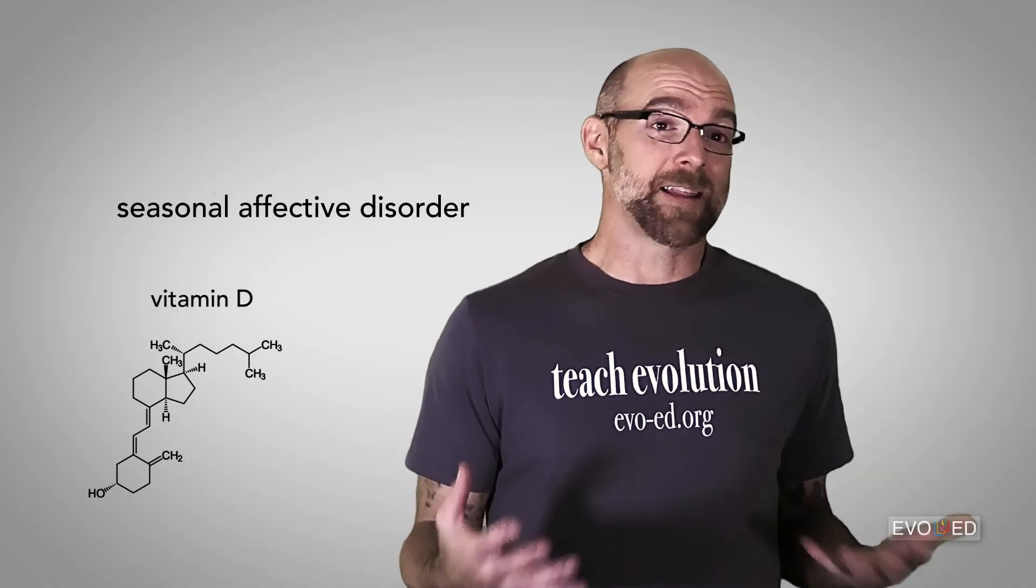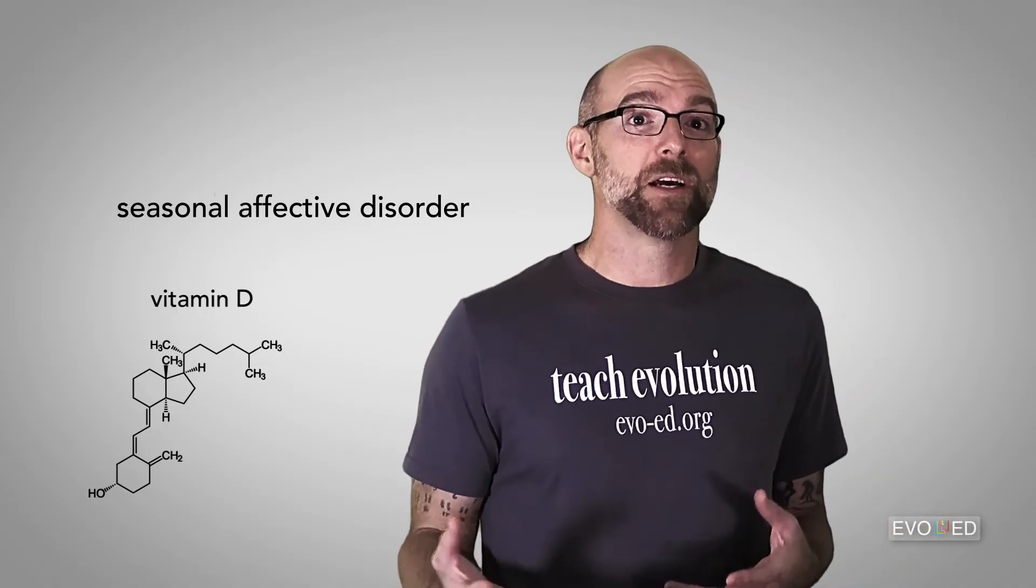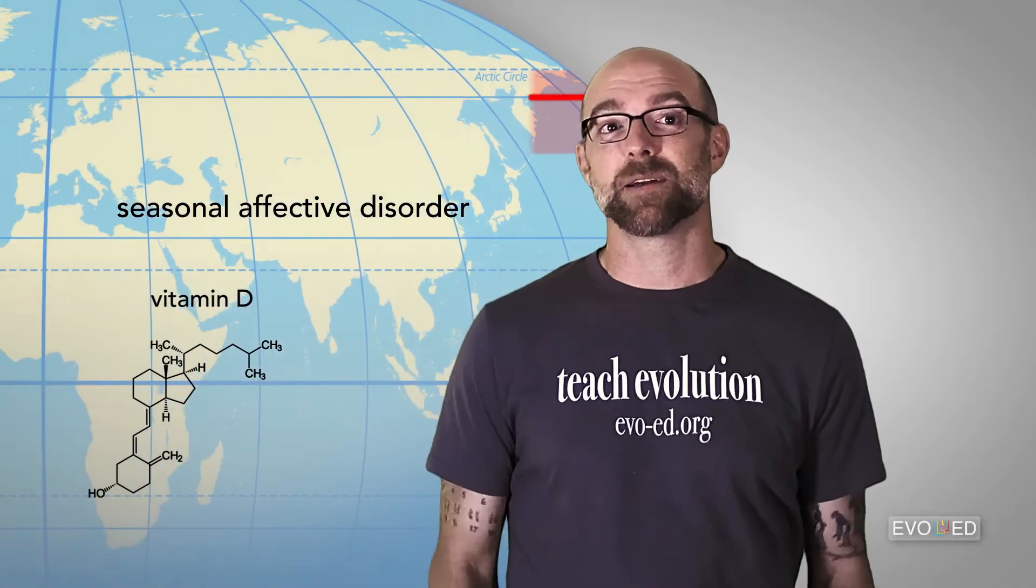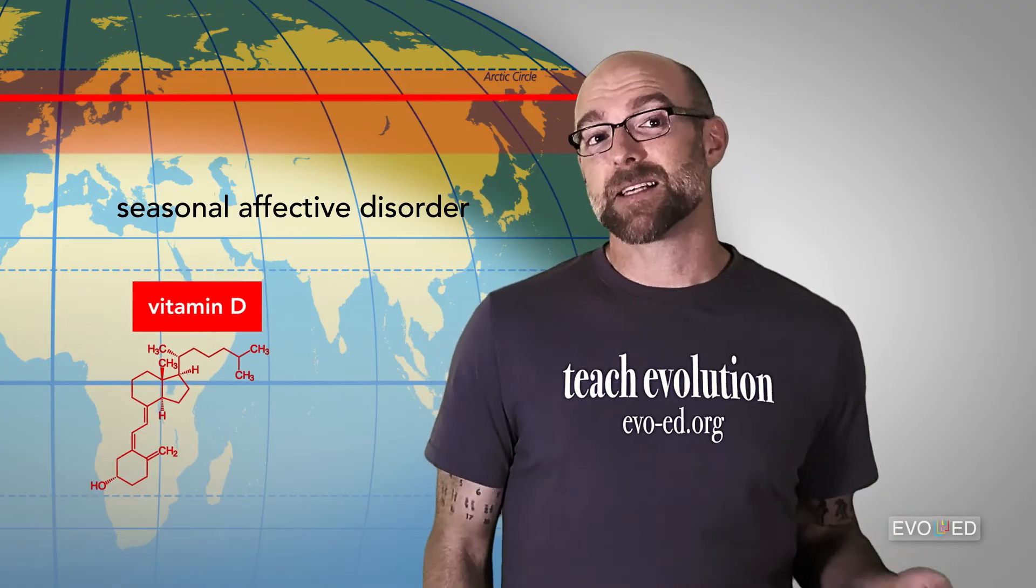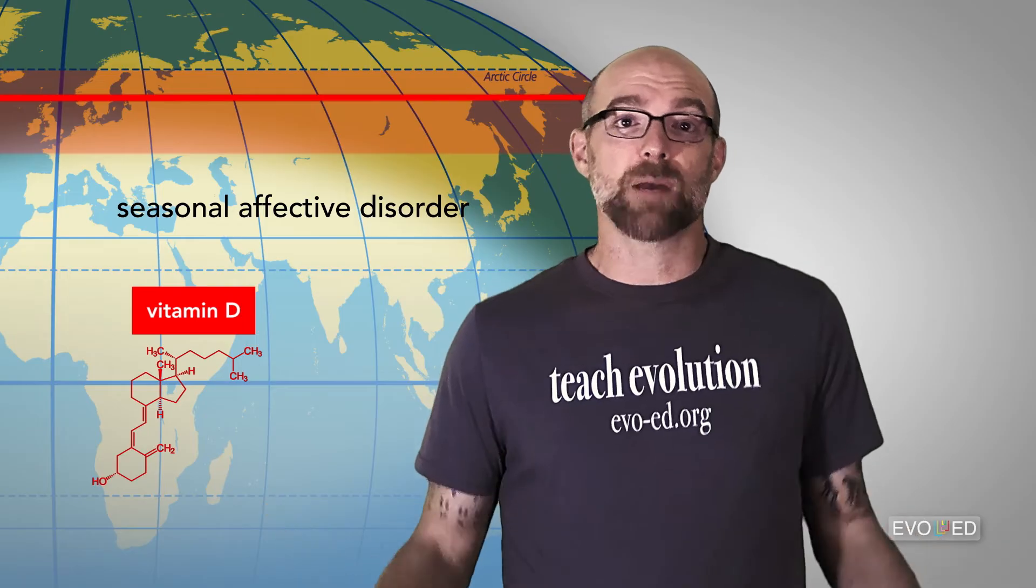You may have heard of something called seasonal depression, or seasonal affective disorder. This is a type of depression that's triggered by changes in seasons, particularly for people who live at extreme latitudes. The theory is that vitamin D plays a role in preventing depression. So in dark months, since you're intercepting less solar radiation, you produce less vitamin D and therefore may be prone to experiencing seasonal depression.